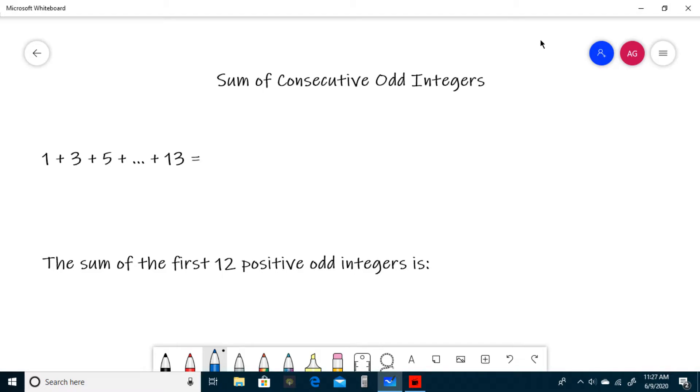For our first example we have 1 plus 3 plus 5 all the way to plus 13. To do this we need to use a formula. We're going to use n plus 1 divided by 2 all squared, where n is the last term in our sequence, so in this case n is 13.